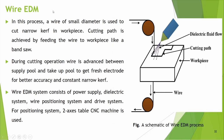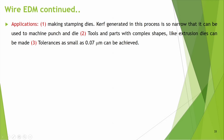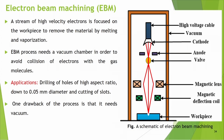Wire EDM is a variant in which the tool is a wire of small diameter used to cut a narrow kerf in the workpiece, fed like a band saw. Wire is continuously advanced between a supply spool and take-up spool to get fresh electrode for better accuracy. Wire EDM system consists of power supply, dielectric system, wire positioning system, and drive system, using a two-axis CNC table. Applications include making stamping dies; tolerances as small as 0.07 micrometers can be achieved, and parts with complex shapes like extrusion dies can be made.